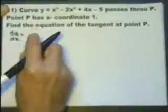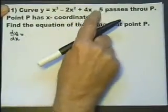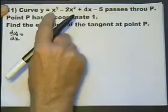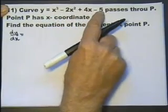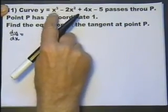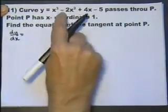Because that gives me the gradient anywhere on that curve. Differentiating the equation of the graph gives me the gradient anywhere on that graph. So let's differentiate this.